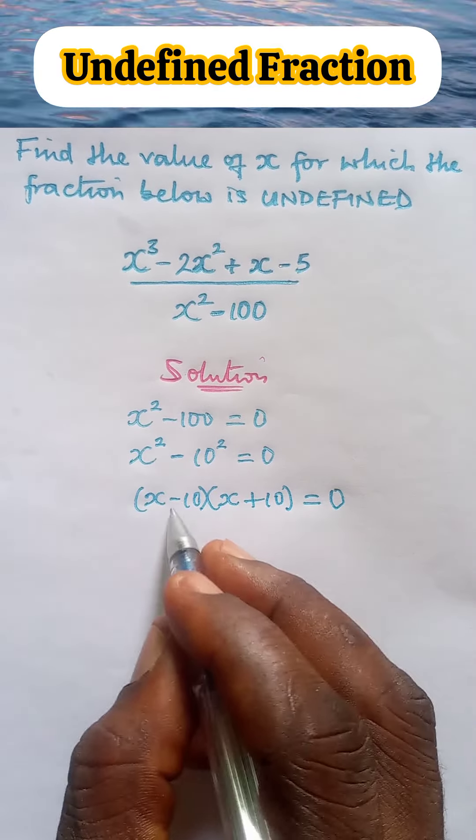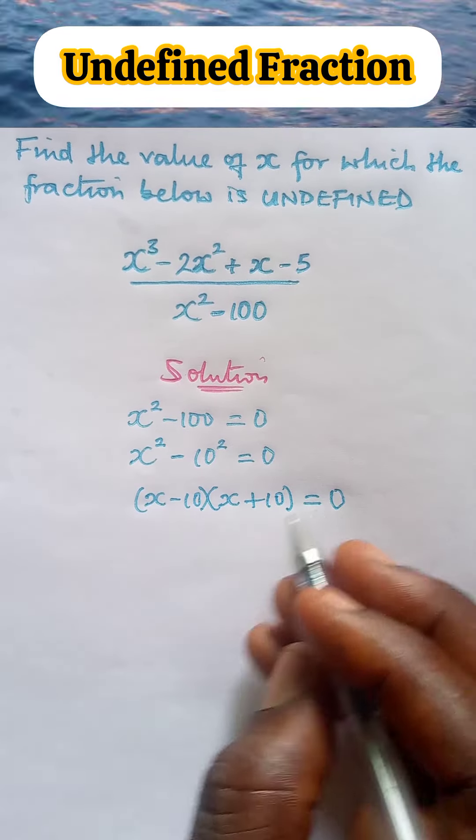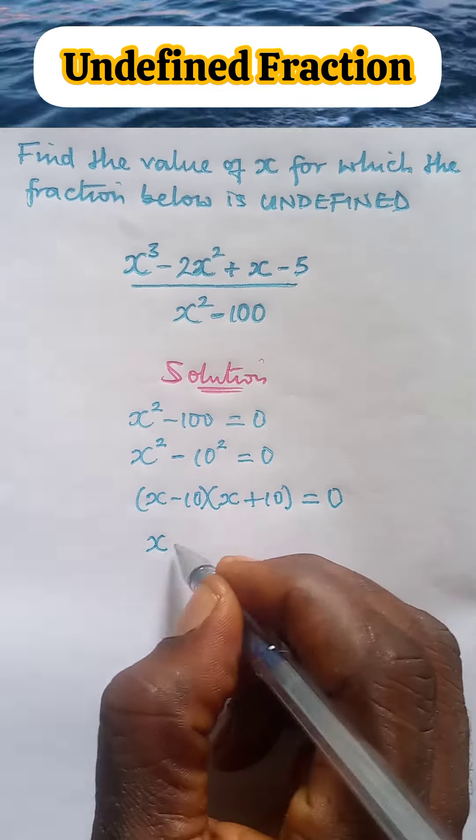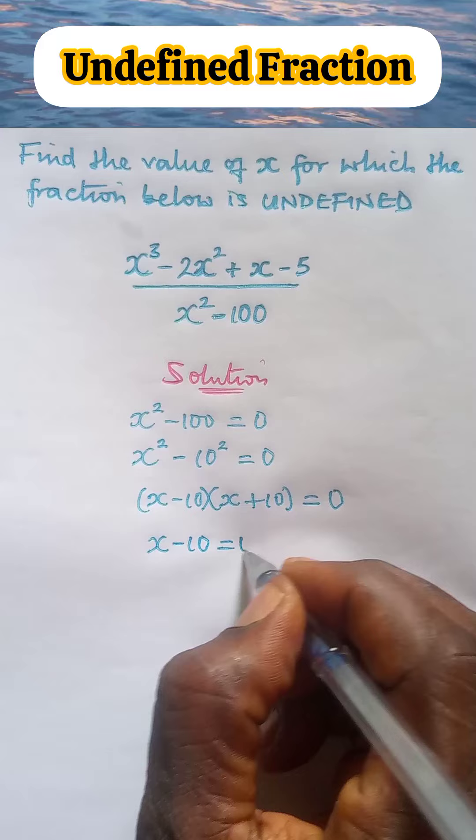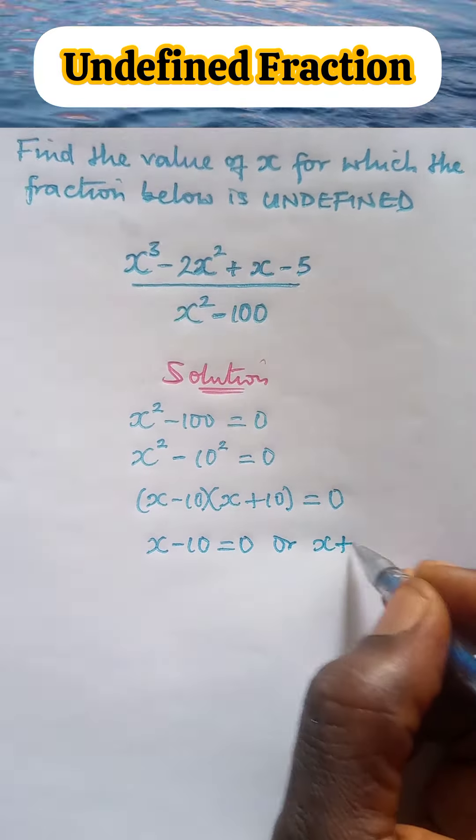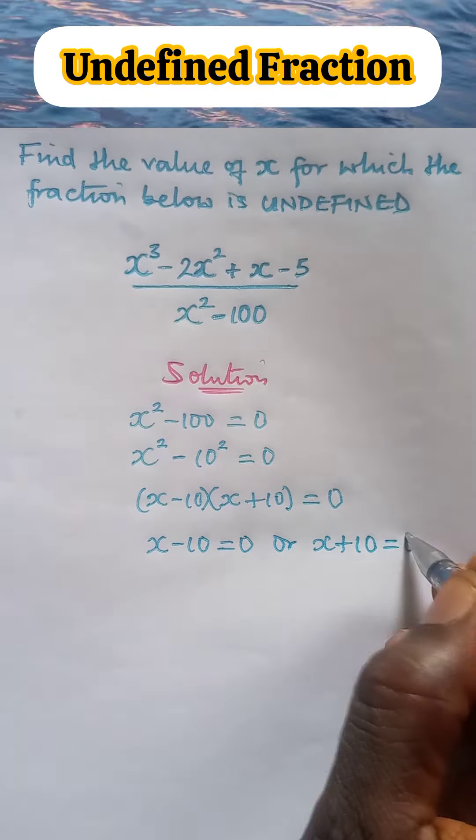If the product of these two terms is equal to 0, it simply means it is either x minus 10 equal to 0 or x plus 10 is equal to 0.